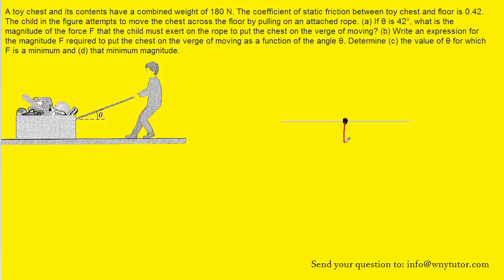We would have the downward gravitational force, which we can label mg. We have the tension force pulling up and to the right on that toy box, and so we can label that T. The surface is pushing up on the toy box, so we would have fn. And then we have the frictional force that's opposing the motion of the toy box, and we can call that fs for static frictional force.